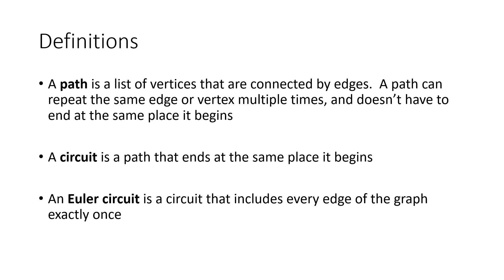We don't just want any path in the parking meter problem — we want to end in the same place we started. That's called a circuit: a list of vertices that tells us where to go, ending at the same place it begins. Specifically, the solution we're looking for is an Euler circuit — named after the mathematician Euler, pronounced 'oil-er'. An Euler circuit is a circuit that ends where it starts, includes every edge of the graph exactly once, meaning we check all parking meters without retracing our steps.